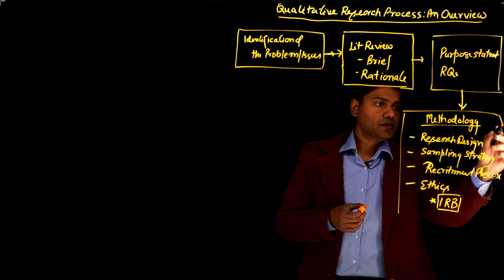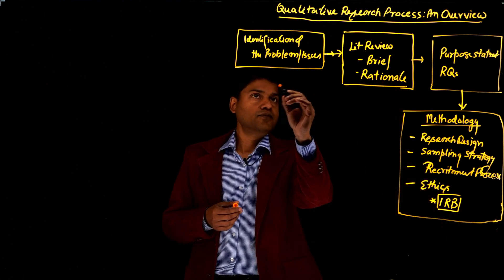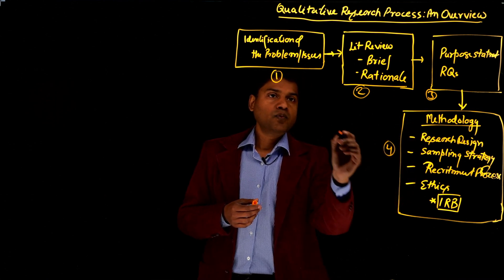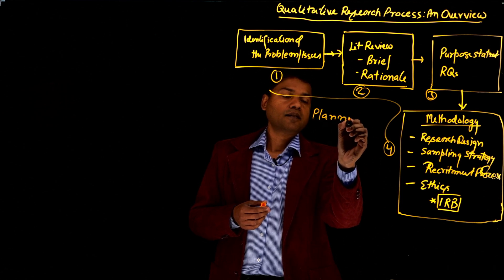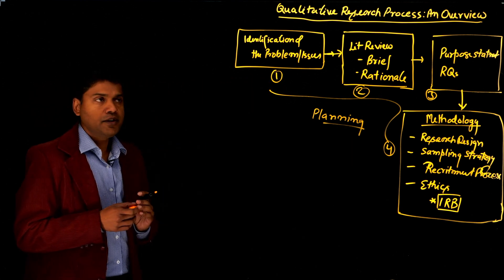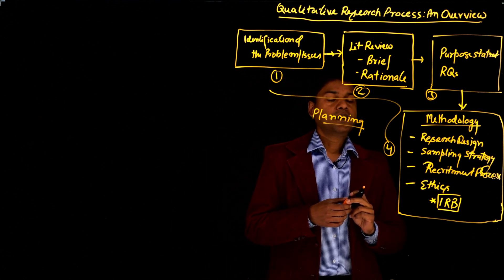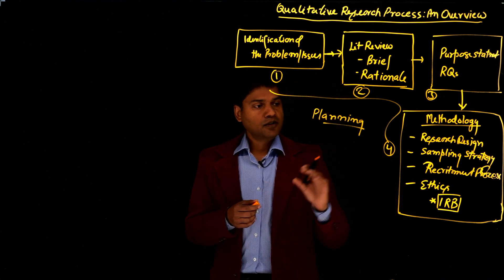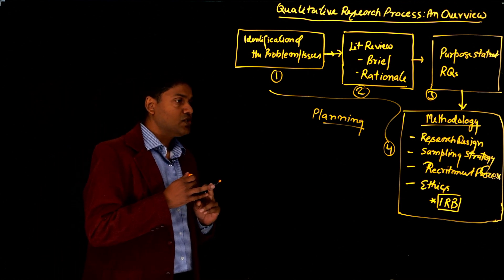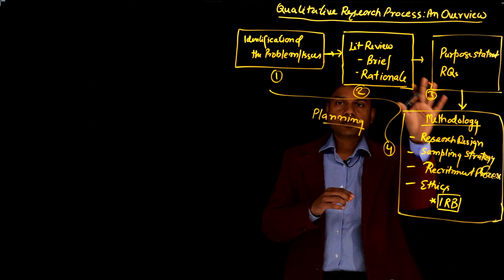This next stage is super important. Steps one through four — identifying the problem, doing a brief literature review, developing the purpose statement and research questions, and determining the methodology — we call this the planning phase. This is the planning phase of your study where you think through the problem, do a brief literature review, provide a solid rationale, come up with your research questions and purpose statement, and think through your research design, sampling strategy, recruitment strategy, and ethics.